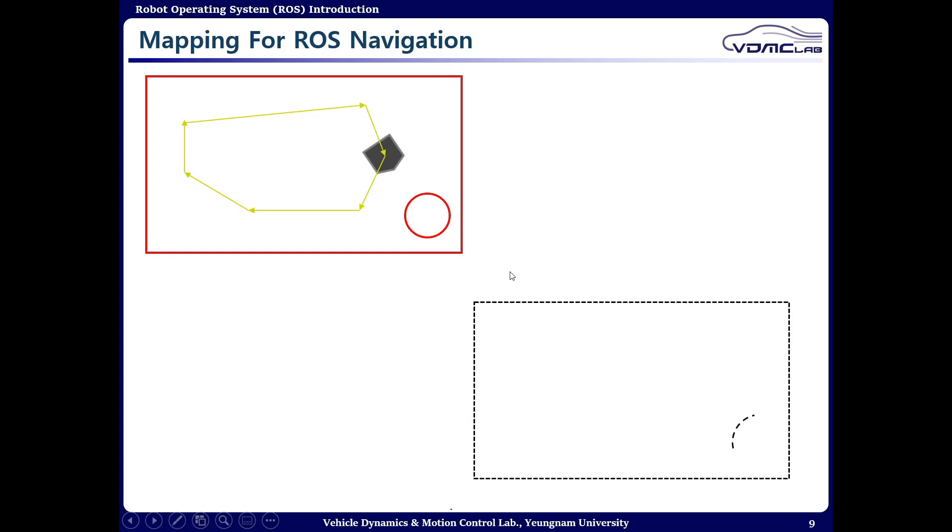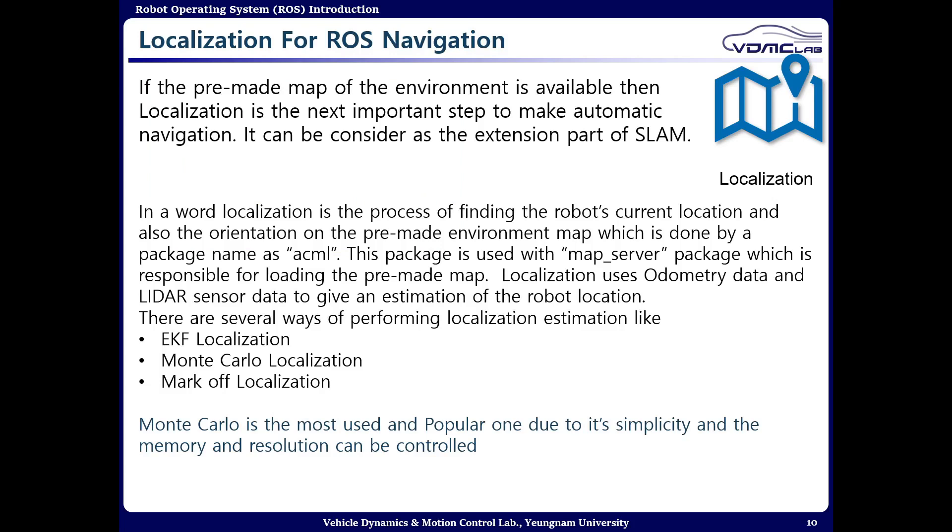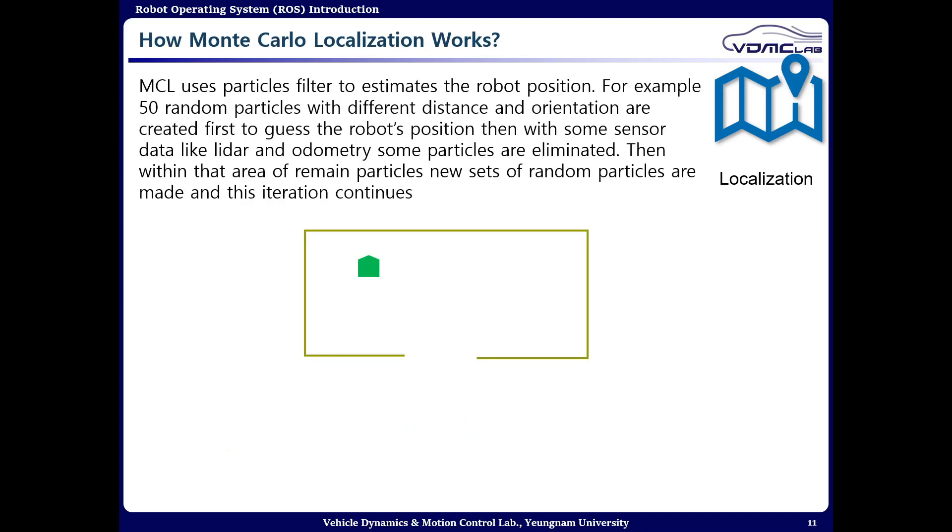Next is the part for the localization. In a word, you have the map now, you have to find your position within the map. If you don't know that, then the map basically has no use. How we can perform that? We can use several methods like extended Kalman filter, Monte Carlo, or Markov, within which Monte Carlo is the most popular one.